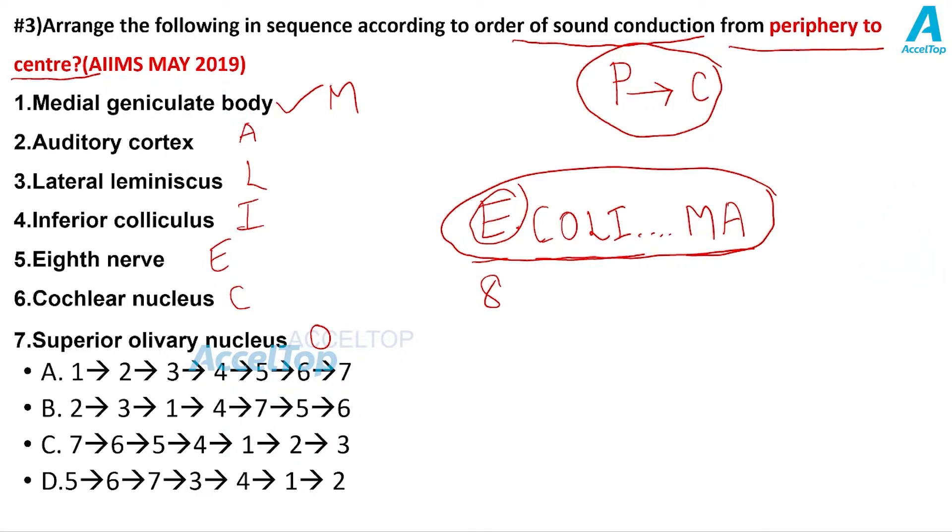So based on this we arrange. So E number 5, C number 6, O superior olivary nucleus number 7. You see, you stop with this. You see in the options is there any order like 5, 6, 7. Just go through. First one no. Second one no. Third one no. See here 5, 6, 7.